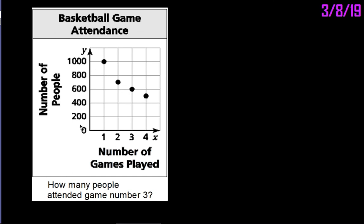For the very last one of the week, it says Basketball Game Attendance. We have our X value as number of games played, and then the Y value, or dependent variable, is going to be how many people attended game number three. This one's quite simple—we don't even have to make a prediction because it gives us the value right here.